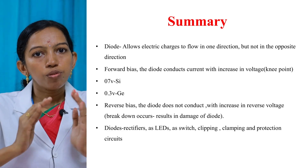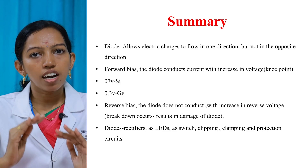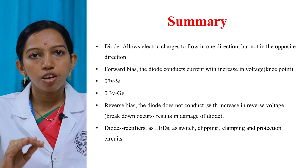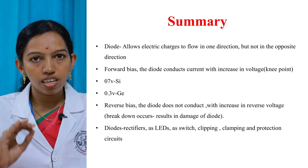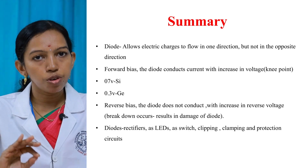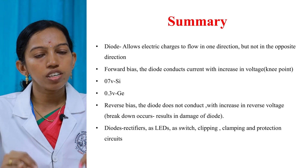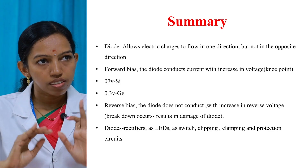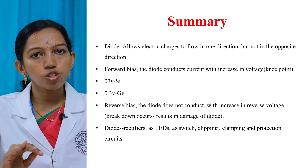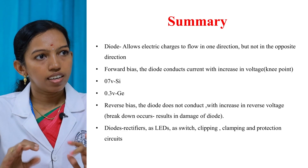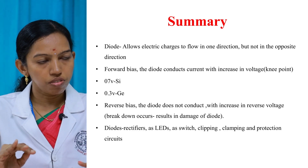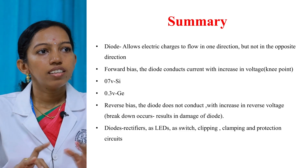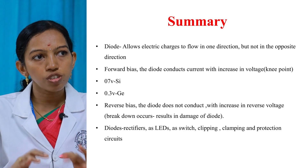Summary: A diode is a two-terminal semiconductor device allowing current flow in one direction and restricting it in the reverse direction. It can be operated in forward bias and reverse bias. In forward bias, current starts flowing when the applied voltage reaches the knee point — 0.7 volt for silicon and 0.3 volt for germanium. In reverse bias, practically a small reverse saturation current flows due to minority charge carriers. When the reverse voltage reaches the breakdown voltage, there is a sharp increase in current causing junction breakdown — the avalanche effect — damaging the diode. Applications include rectifier circuits, LEDs, switches, wave shaping circuits like clipping and clamping circuits, and protection circuits.